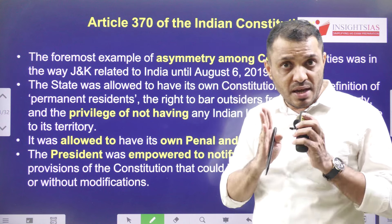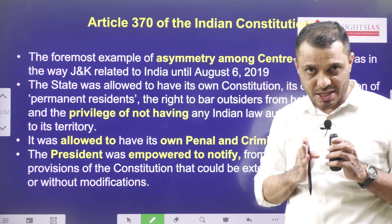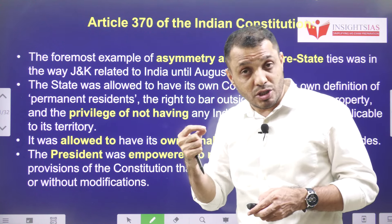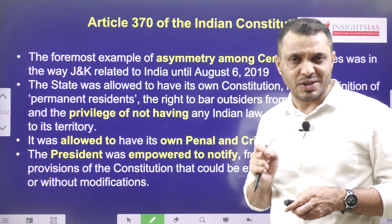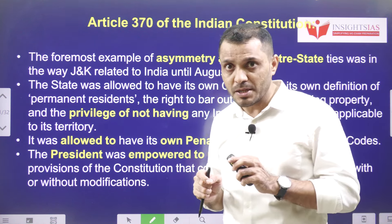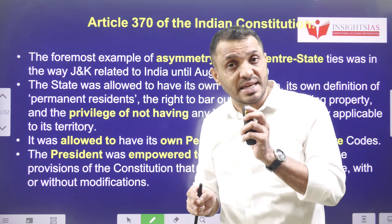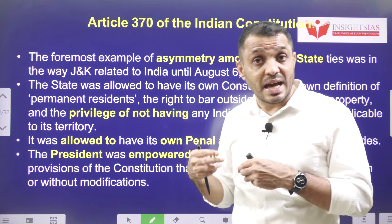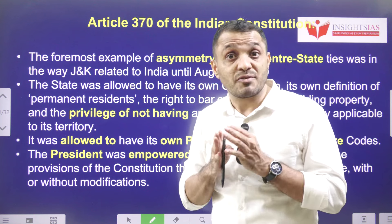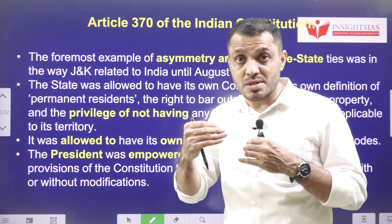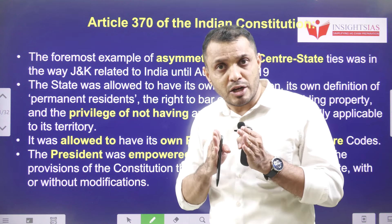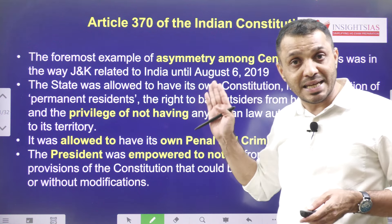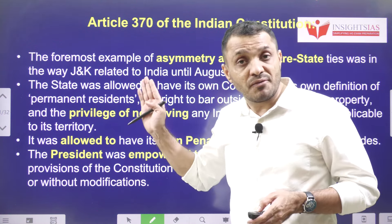By virtue of Article 370, Jammu & Kashmir was entitled to have its own constitution, which contained Article 35A — according to which only Jammu & Kashmir permanent residents could buy property; outsiders could not. Even because of Article 370, Jammu & Kashmir had a separate constitution, a separate flag, an assembly duration of six years, and laws made by Parliament were not automatically applicable to it. These special provisions were enjoyed by Jammu & Kashmir because of Article 370 — one form of asymmetric federalism.